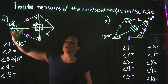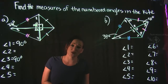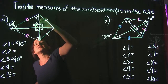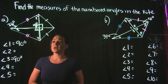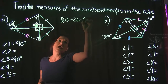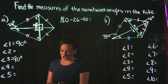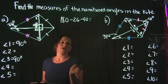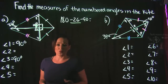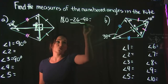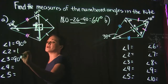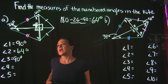Since angle 1 is 90° and the given angle is 26°, and the three angles of a triangle add up to 180°, we can find angle 2 by calculating 180 − 26 − 90. Using a calculator: 180 minus 26 minus 90 equals 64°. So angle 2 is 64°.